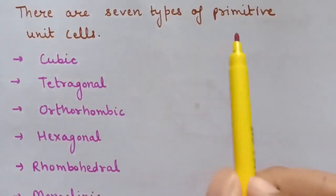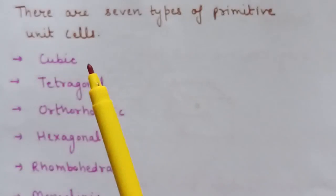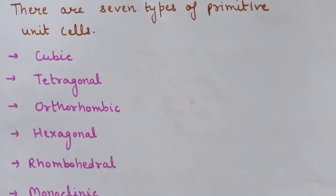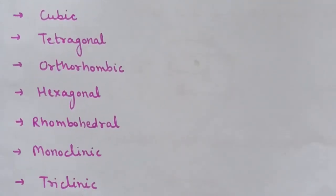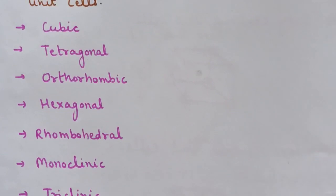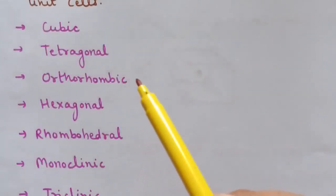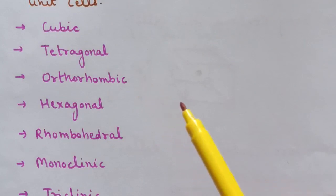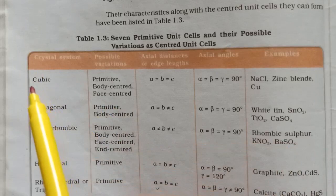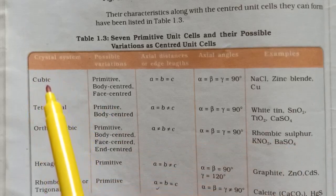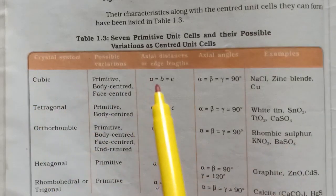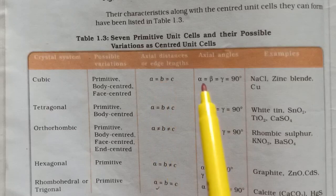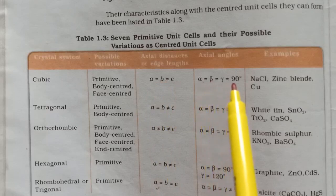There are seven types of primitive unit cells: cubic, tetragonal, orthorhombic, hexagonal, rhombohedral, monoclinic, and triclinic. These are characterized by edge dimensions and angles alpha, beta, and gamma. In cubic: A = B = C and alpha = beta = gamma = 90°. In tetragonal: A = B ≠ C and alpha = beta = gamma = 90°. Examples of tetragonal include white tin, TiO₂, and calcium sulfate; cubic examples include NaCl, zinc blende, and copper.